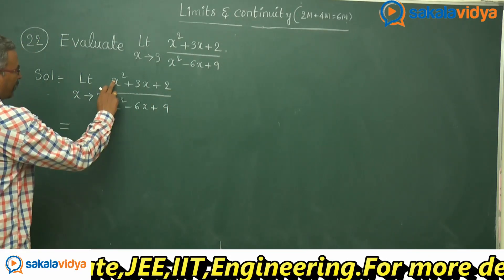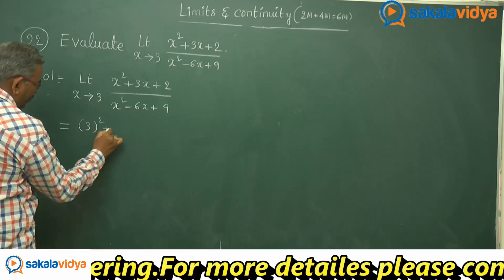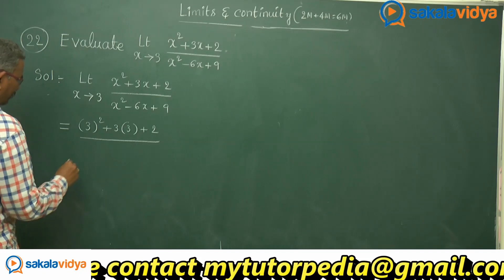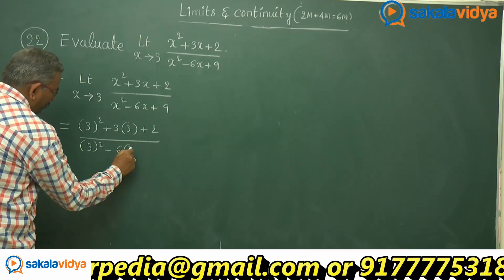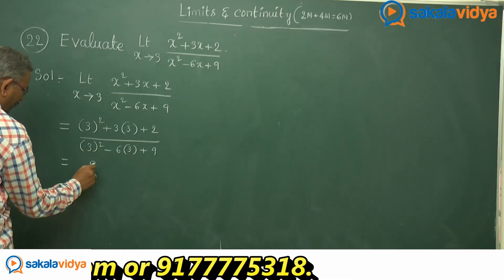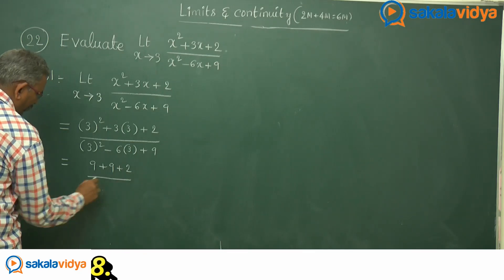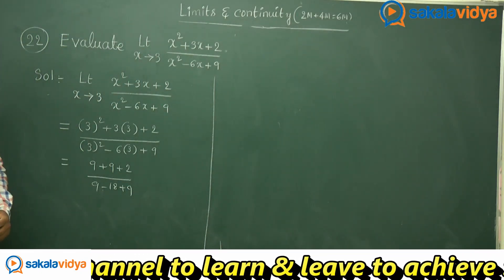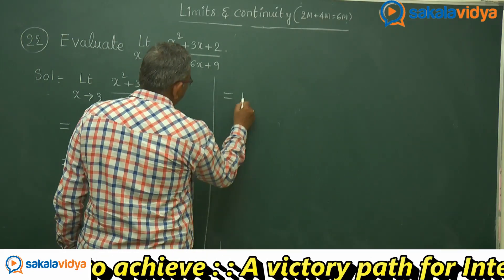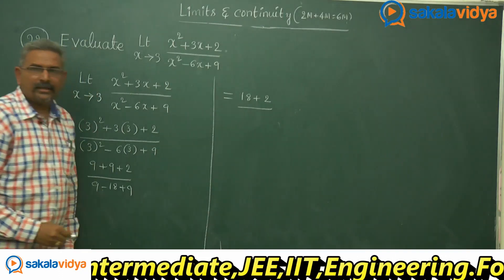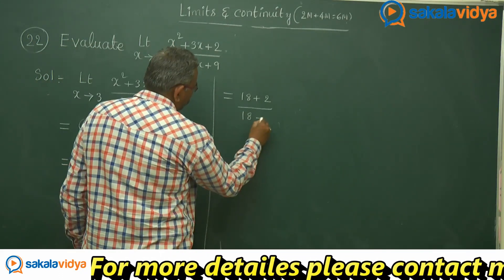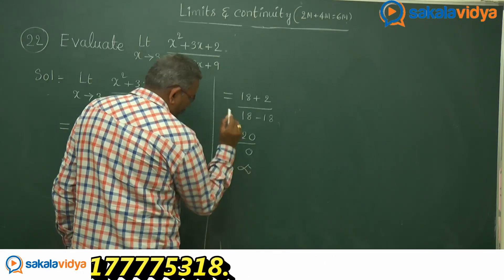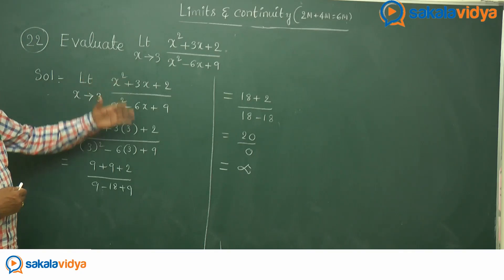Limit x tends to 3 of x squared plus 3x plus 2 divided by x squared minus 6x plus 9. Replace x with 3: numerator is 3 squared plus 3 times 3 plus 2, which is 9 plus 9 plus 2 equals 20. Denominator is 3 squared minus 6 times 3 plus 9, which is 9 minus 18 plus 9 equals 0. So we get 20 divided by 0, which is infinity or undefined.